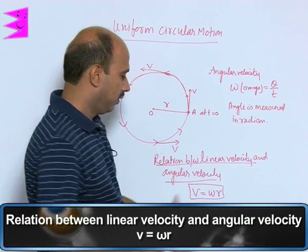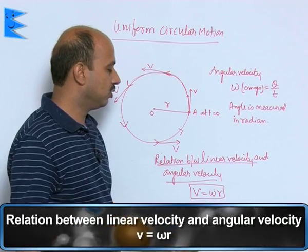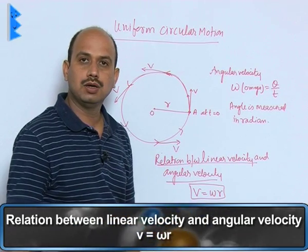This relation is simply V is equal to omega into r. So here V is linear velocity, omega is angular velocity and r is the radius of the circle.